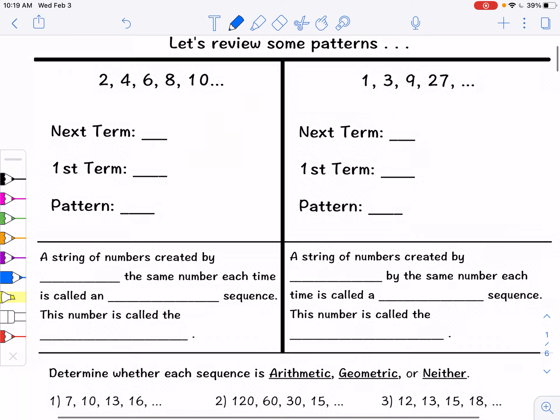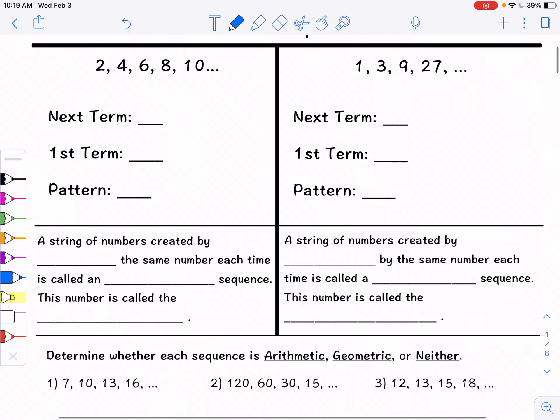So first let's review some patterns. A sequence is a list of terms that make up a pattern. If we take a look here I see that I have a plus 2 pattern. To go from one term to the next we're always adding 2. So our next term, 10 plus 2, would give us 12. Our first term is 2 and then our pattern is plus 2.